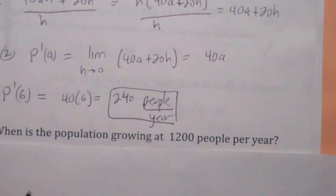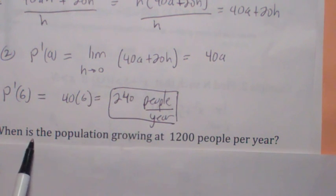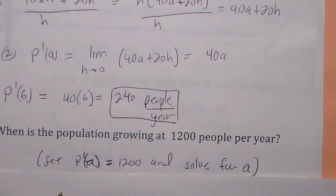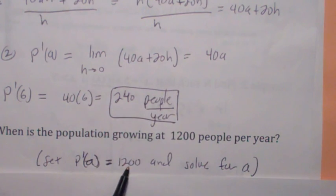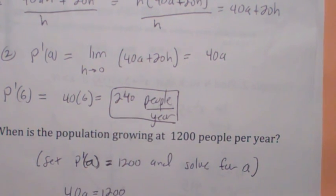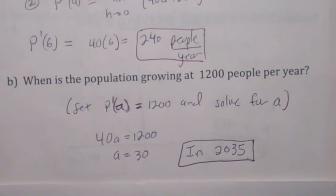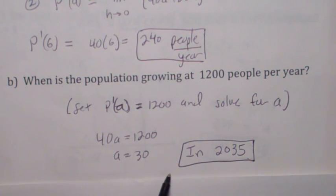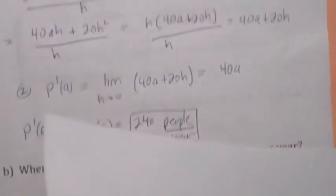All right, let's ask another question. When is the population growing at 1,200 people per year? Well, there, they're giving you, it says, when is the population growing? That's the derivative, right? That's the instantaneous growth rate. So they want to know when. They want to know the time. So you're going to set the derivative equal to 1,200 and solve for a. So you get 40a equals 1,200 and so a equals 30. So if you add that on to 2005, you'd say in the year 2035, okay?